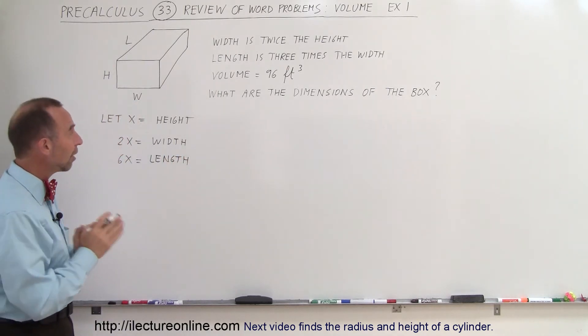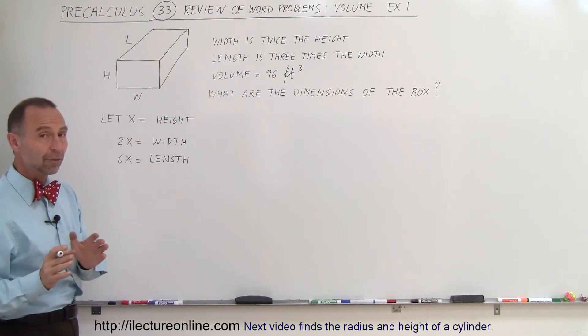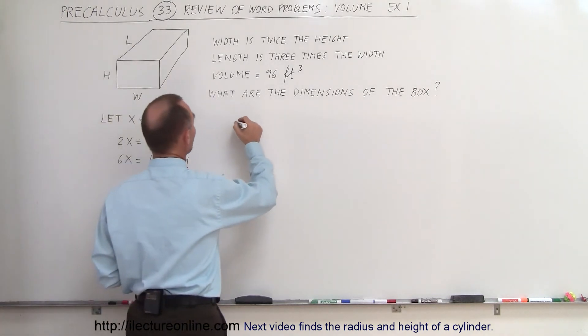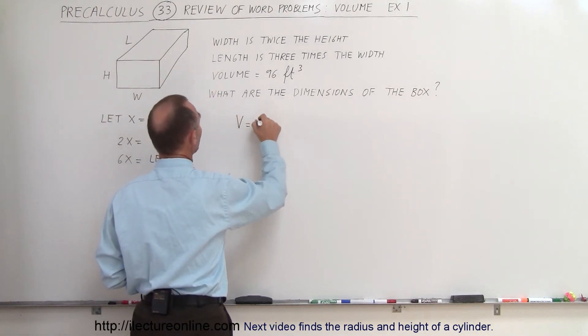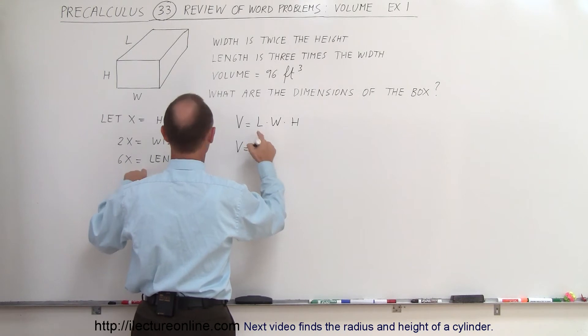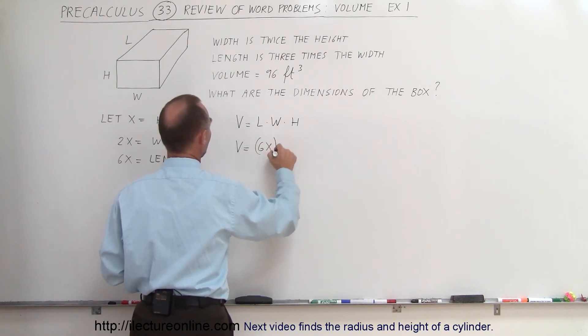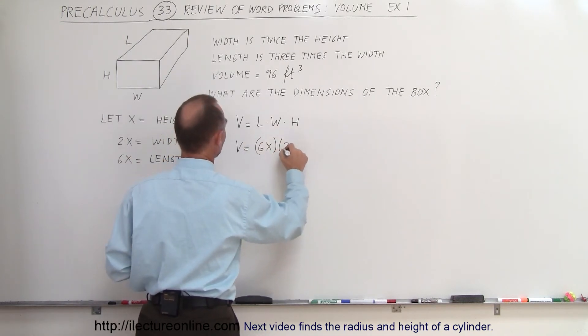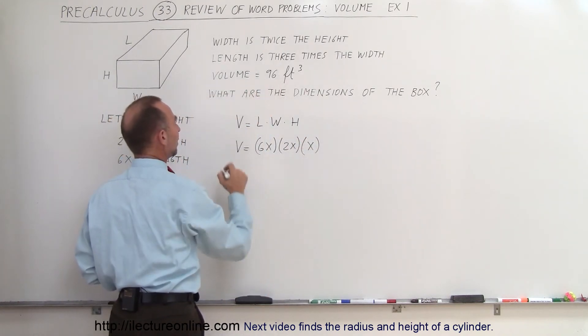Alright, now that we know that, we know that the volume is 96 cubic feet, and the equation of the volume is that the volume is equal to the length times the width times the height. And so the volume must be equal to, the length is 6x, the width is 2x, and the height is x, and then we know that the volume is 96 cubic feet.